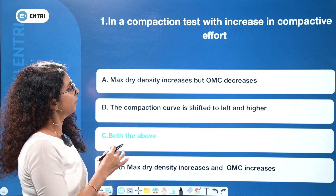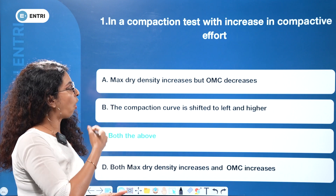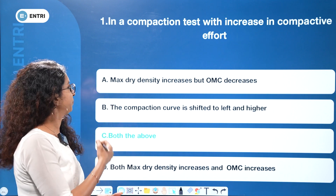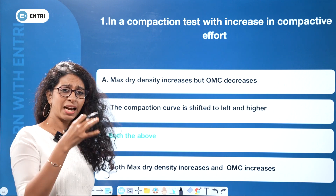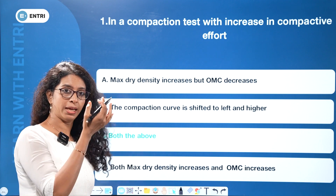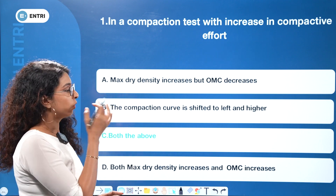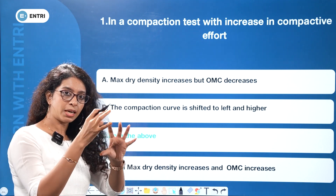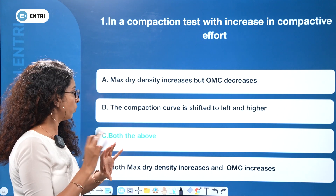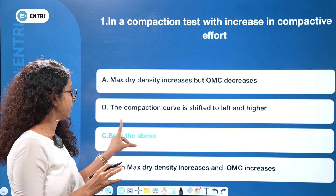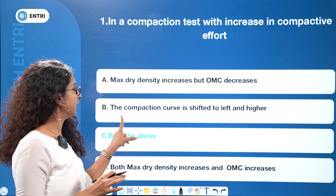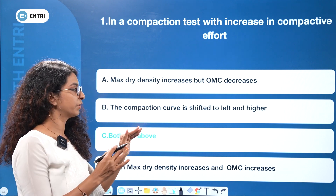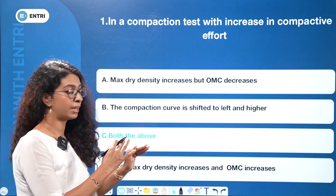This is what happens with compactive effort — dry density increases and optimum moisture content decreases. The compaction curve is shifted to the left and higher.